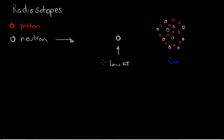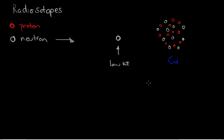The neutron doesn't experience the Coulombic repulsive force that a proton would — I'll show how to make radioisotopes with protons in another video. Because it doesn't feel the Coulombic repulsive force, it isn't deflected away. At Lucas Heights they make copper-64, and they do that by this reaction.